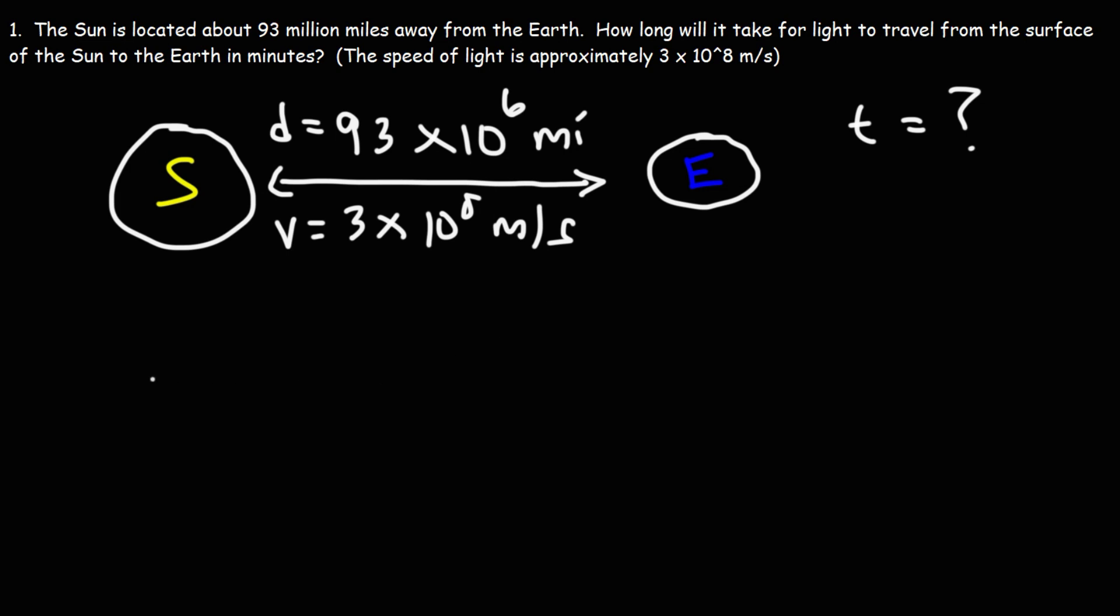So the formula we need to use is d equals vt. Solving for t, we could divide both sides by v. So to calculate the time, we need to take the distance and divide it by the speed.